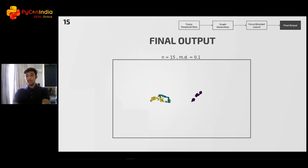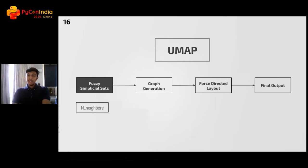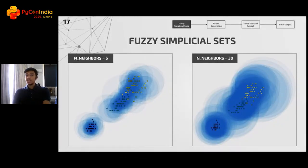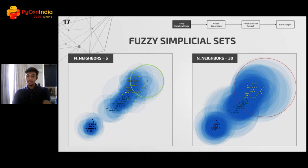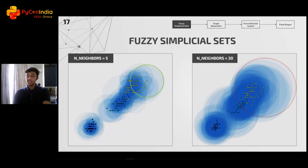Now we have a fair idea of how the algorithm works, but how do we control it? How do we optimize it to fit our dataset? Let's look at the variation of the input parameters. The parameters affect each step in this process. The parameter which affects the first step is n_neighbors. The process of plotting the fuzzy sets depends on the value of n_neighbors. A small n means we want a local interpretation, which more accurately captures fine detail in the structure and variations. But a large n means we miss these fine details but have a broad understanding of the global structure.